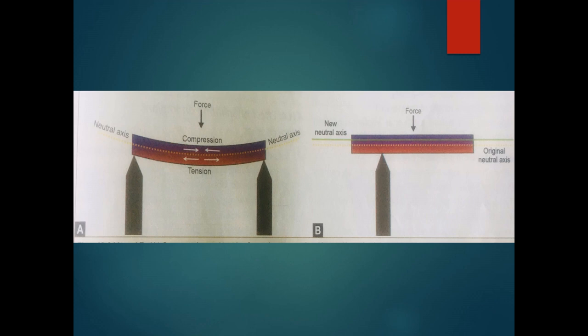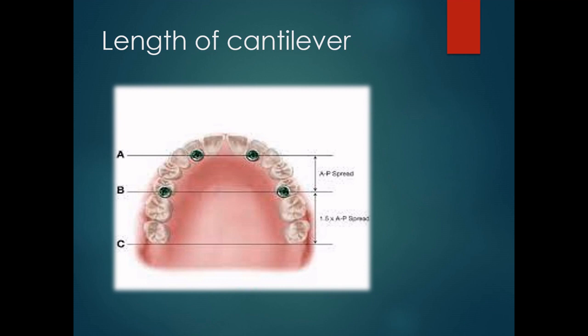Connectors in cantilever restorations need to be broader near the occlusal surface in order to withstand these occlusal forces. The length of the cantilever is determined by the anterior-posterior spread — the distance between the most anterior and most posterior implant used as an indicator. The formula is: cantilever span is 1.5 times the anterior-posterior spread.